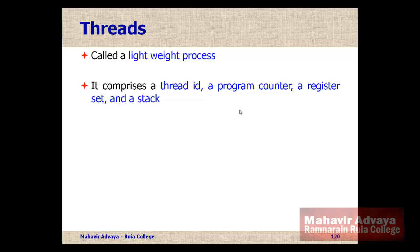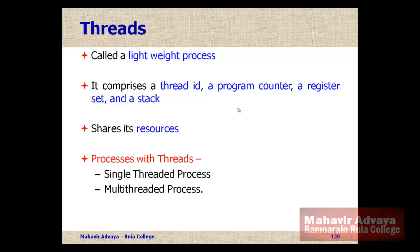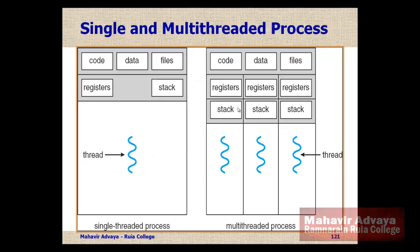Every thread is distinguished by the Thread ID. A thread is called a lightweight process as it is involved in executing some part of a process, and in turn they share the resources of a process. A process may have one or multiple threads — there may be processes with a single thread and processes with multiple threads.